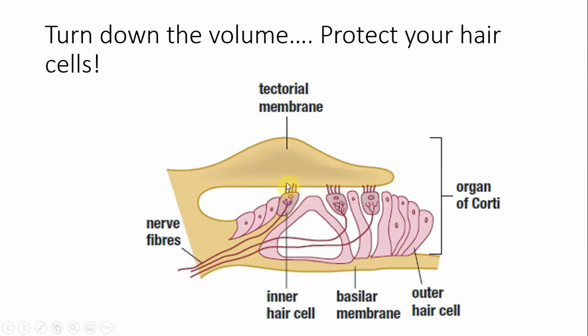How do you lose your hearing? The most common way is the bending and damaging of the tiny projections on your hair cells. Listening to music too loud will damage these projections — and this is irreversible damage. This is why older people have hearing loss: their hair cells have broken down over time and no longer transmit those signals.